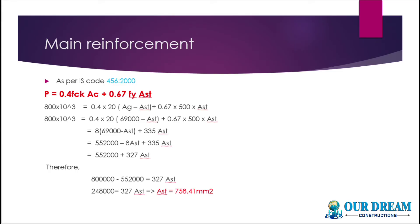So we used the load, the area of the column, the grade of concrete, and the grade of steel. The Ast value is 758.41 mm². Now we are going to provide the reinforcement bars.